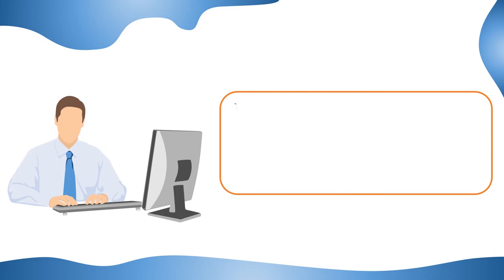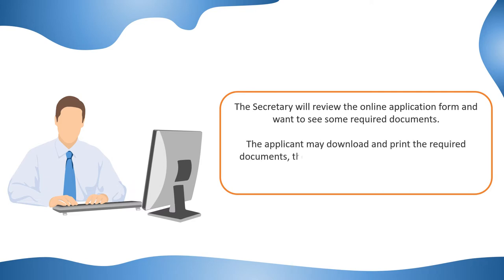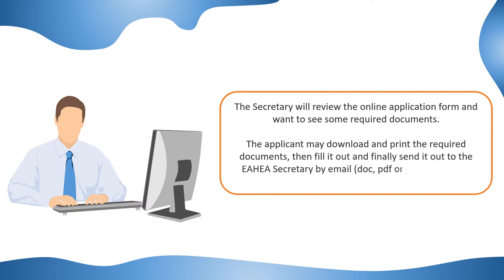The secretary will review the online application form and will need to see some required documents. The applicant may download and print the required documents, then fill them out and finally send them to the EAHEA secretary by email.